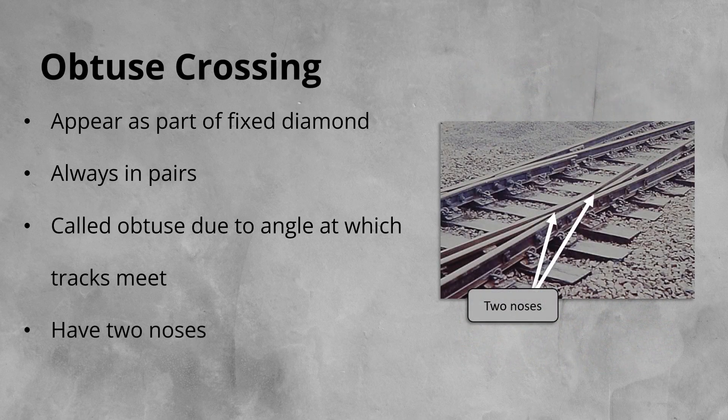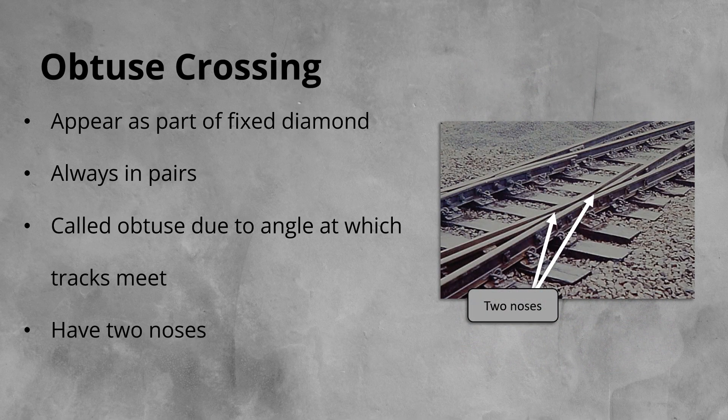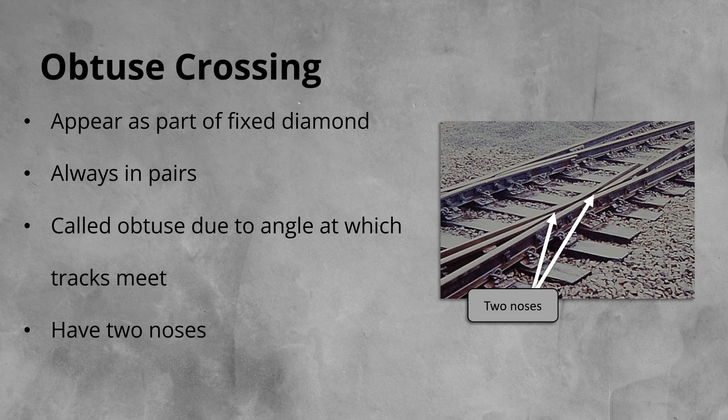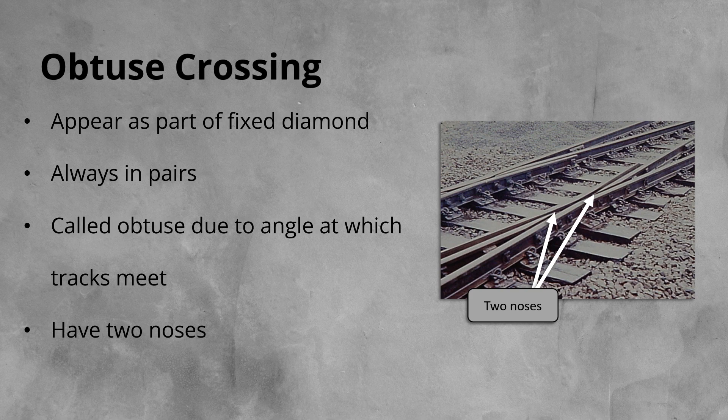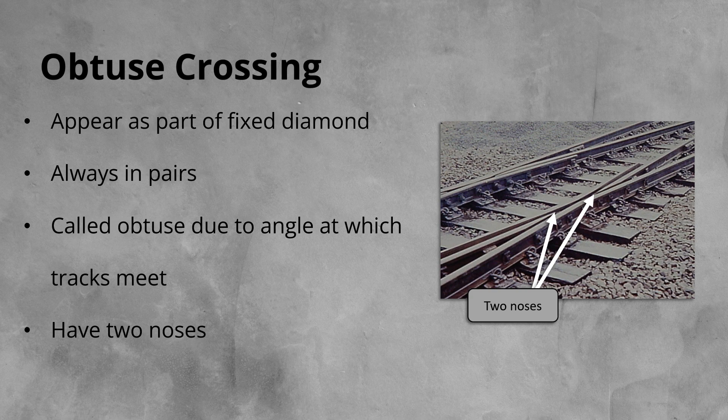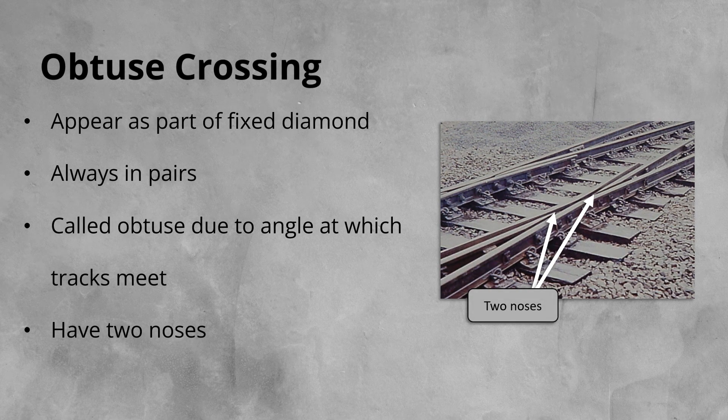Obtuse are also distinctive from common crossing, as they have two crossing noses. Rather than Vs, they have point rails. This is because the nose is formed from one rail. It is pretty common to see an obtuse crossings with an integrated check rail, this is because the crossings are directly opposite each other, so there is nowhere to mount a check rail conventionally. This is known as a raised check.